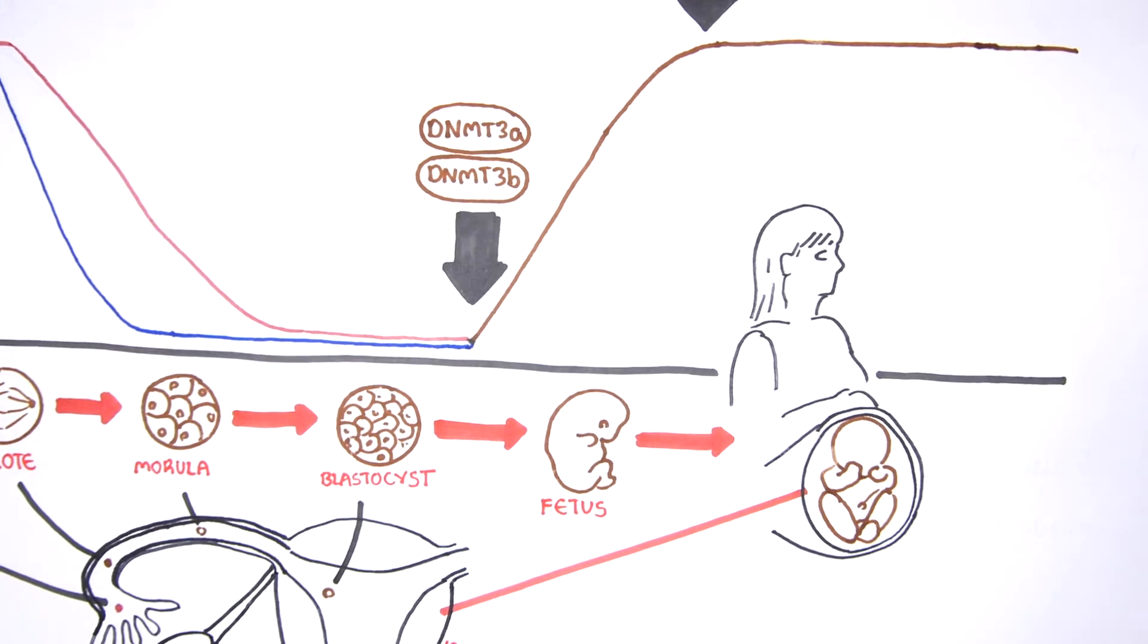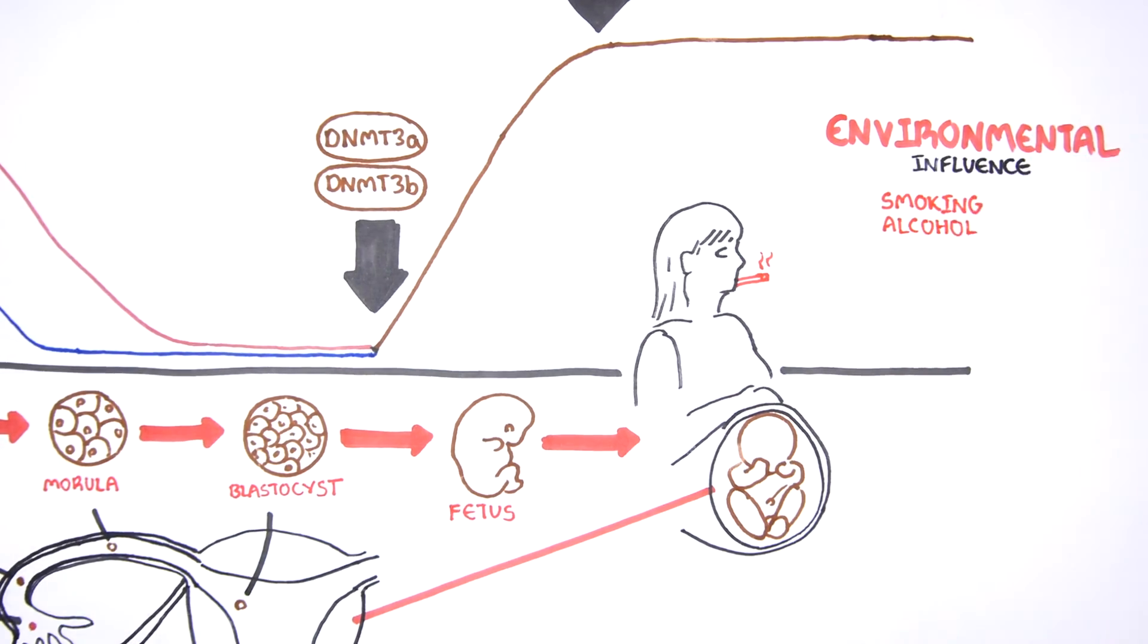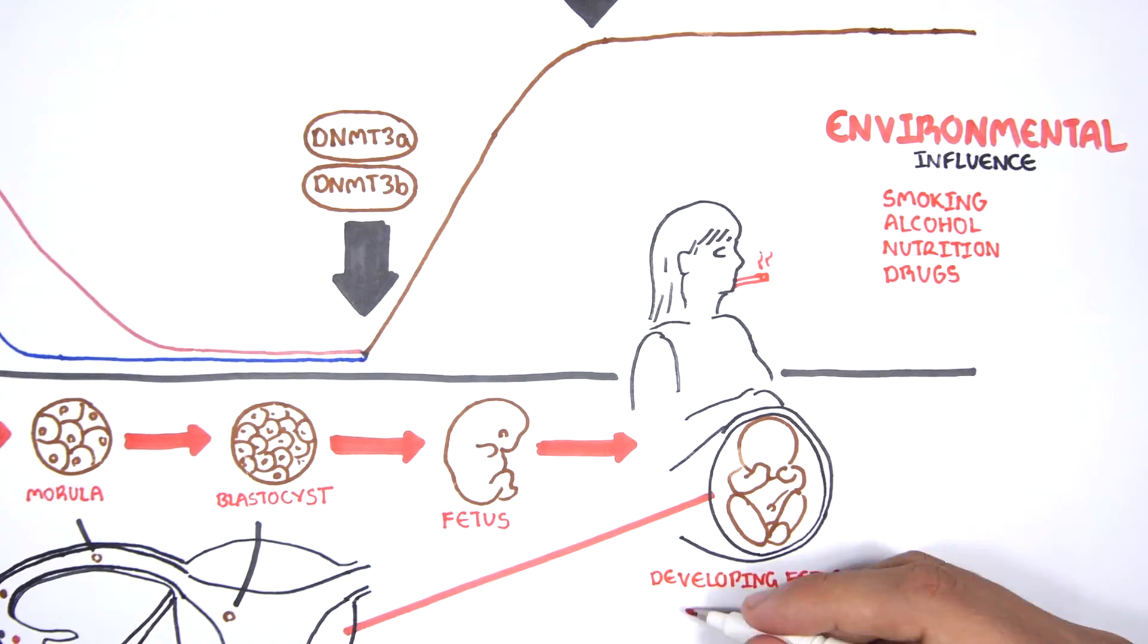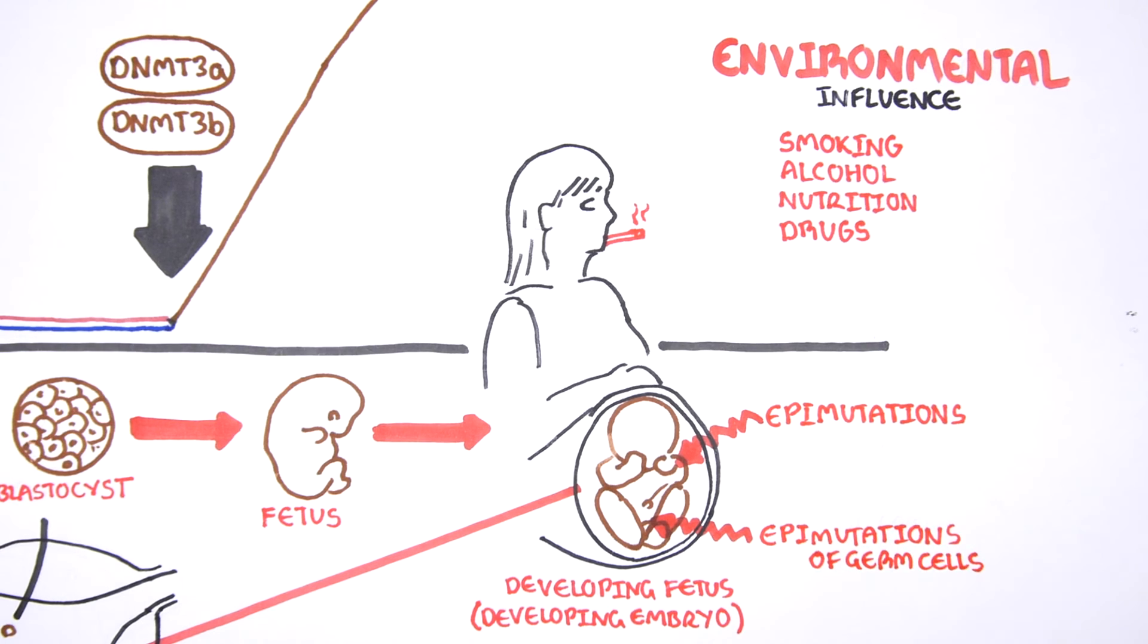For example, the mother's environmental exposure to smoke, alcohol, nutrition, and drugs may lead to random epimutations in the developing embryo, and even in the germ cells of the developing embryo.